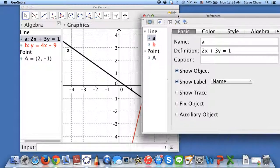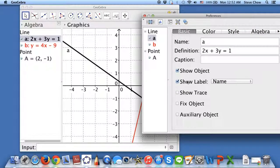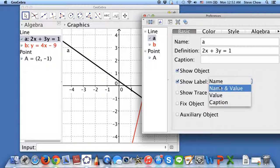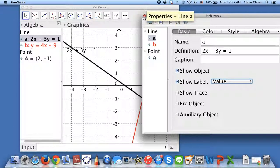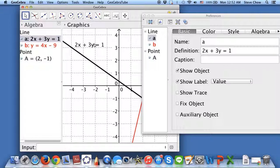What you would like to do is click on the line, then go to object properties, and let me go to basic. For the show object, instead of name (because this is name a, the line a), you want to choose name and value. But then the a will just be weird because it will be a is equal to 2x plus 3y is equal to 1. Let me just choose value. The value will be just the definition, namely the equation. You see here we have the equation for the line.